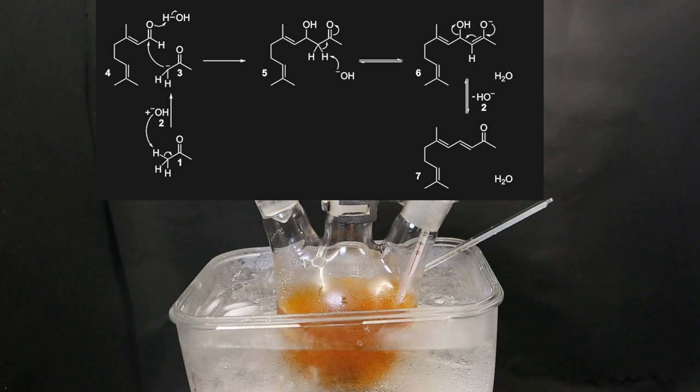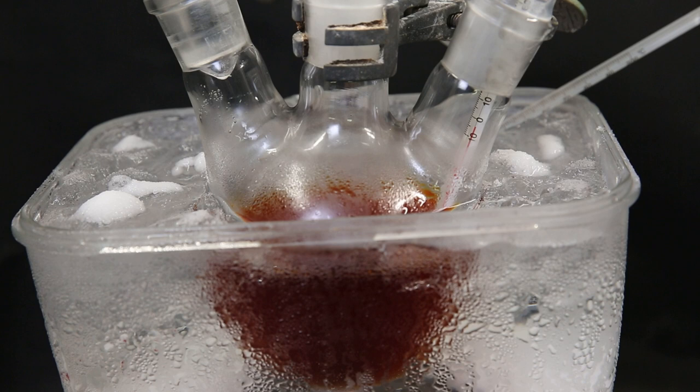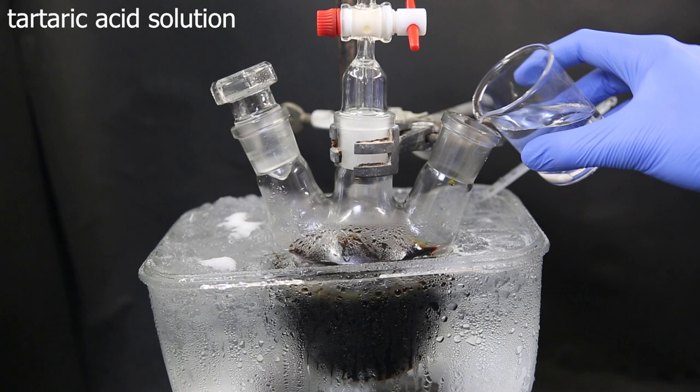When all of the sodium ethoxide solution had been added, I left it to stir for a few more minutes. And after that, I added the previously prepared tartaric acid solution to the mixture. This will destroy any remaining base. And immediately a white precipitate forms and the solution quickly turns orange.